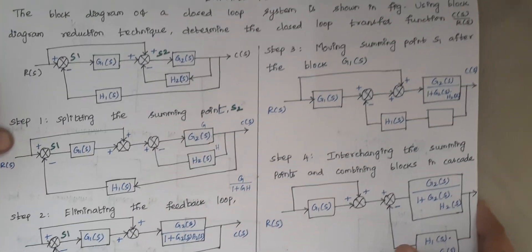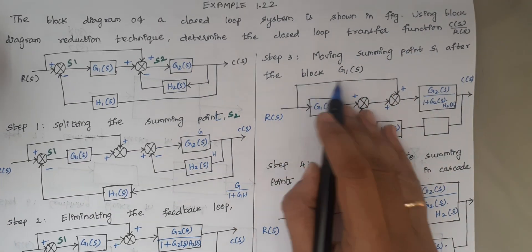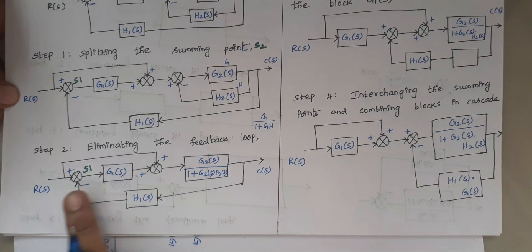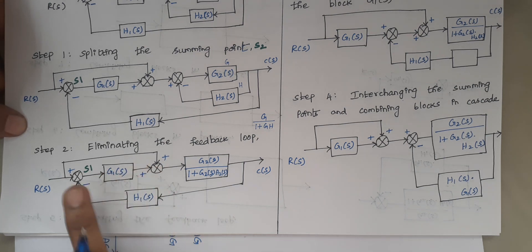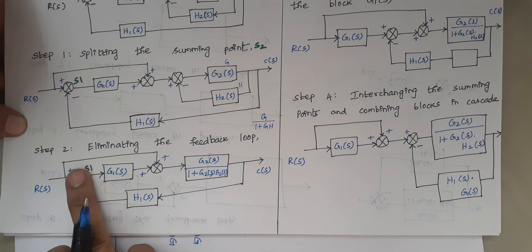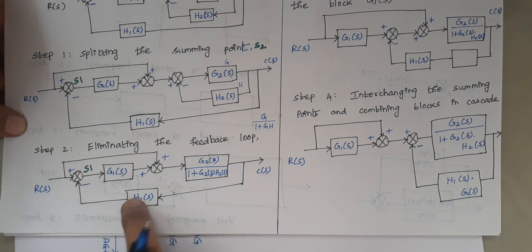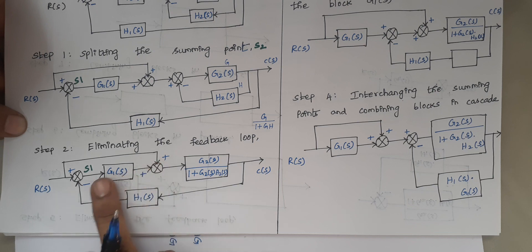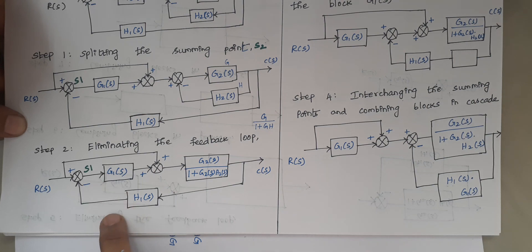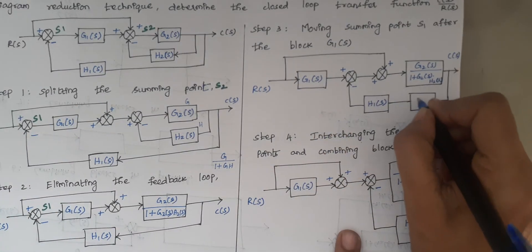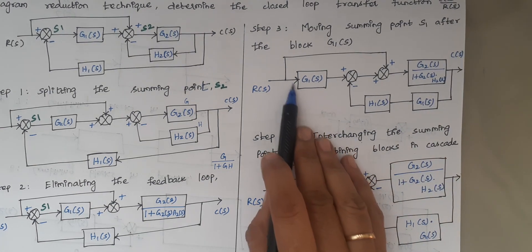The next step is moving the summing point S1 after the block G1. When moving a summing point after a block, we have to include the element present in that block. Since G1(S) is here, when moving the summing point after G1, we have to include G1(S) in the associated line.